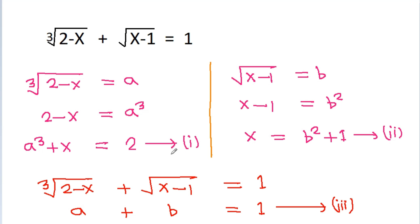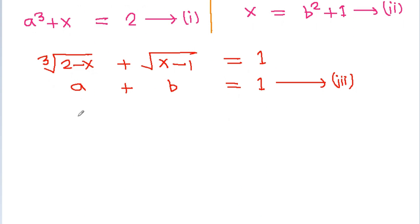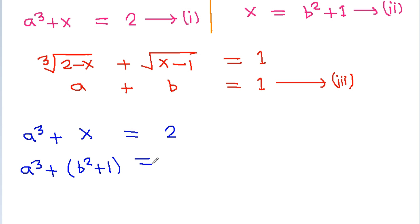So we have 3 equations and 3 variables: a, b, and x. From equation 1, a cube plus x is equal to 2. Now we can eliminate x using equation 2, where x is equal to b squared plus 1. Substituting gives a cube plus b squared plus 1 equals 2, or a cube plus b squared is equal to 1. From equation 3, b is equal to 1 minus a.